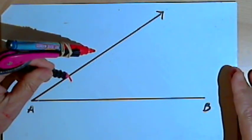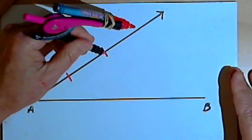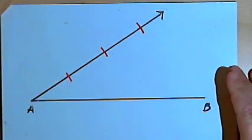I'll move my compass point to the arc and draw a second arc. I'll move the compass point again and draw a third arc.